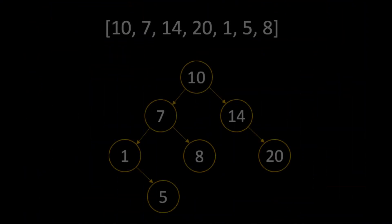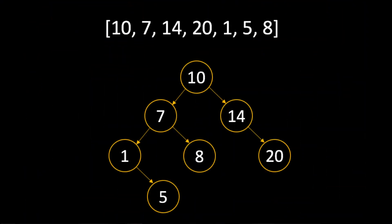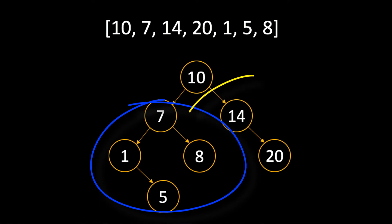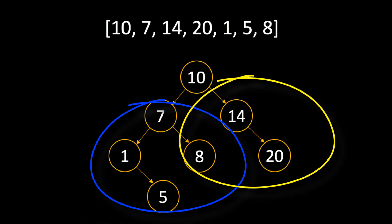So with that review under our belts, let's discuss what it means for a binary search tree to be balanced. In this image, we have a small but balanced binary search tree. This tree is considered balanced because the difference between the heights of the left subtree and the right subtree is not more than one.